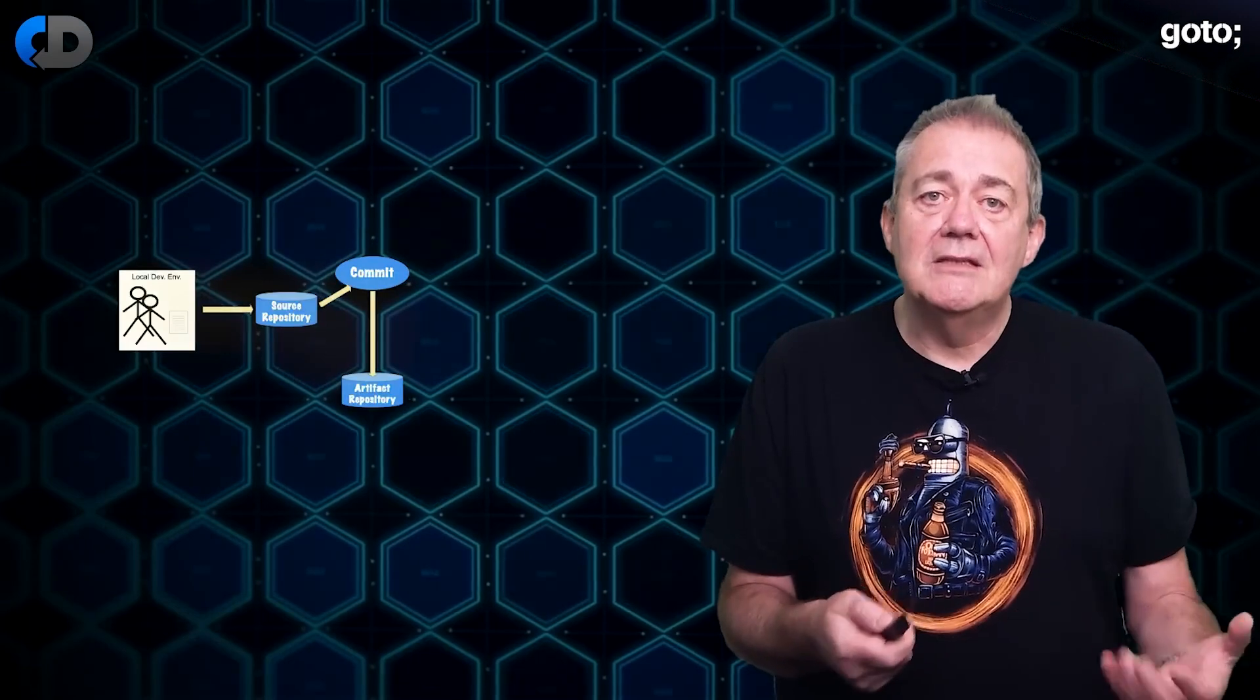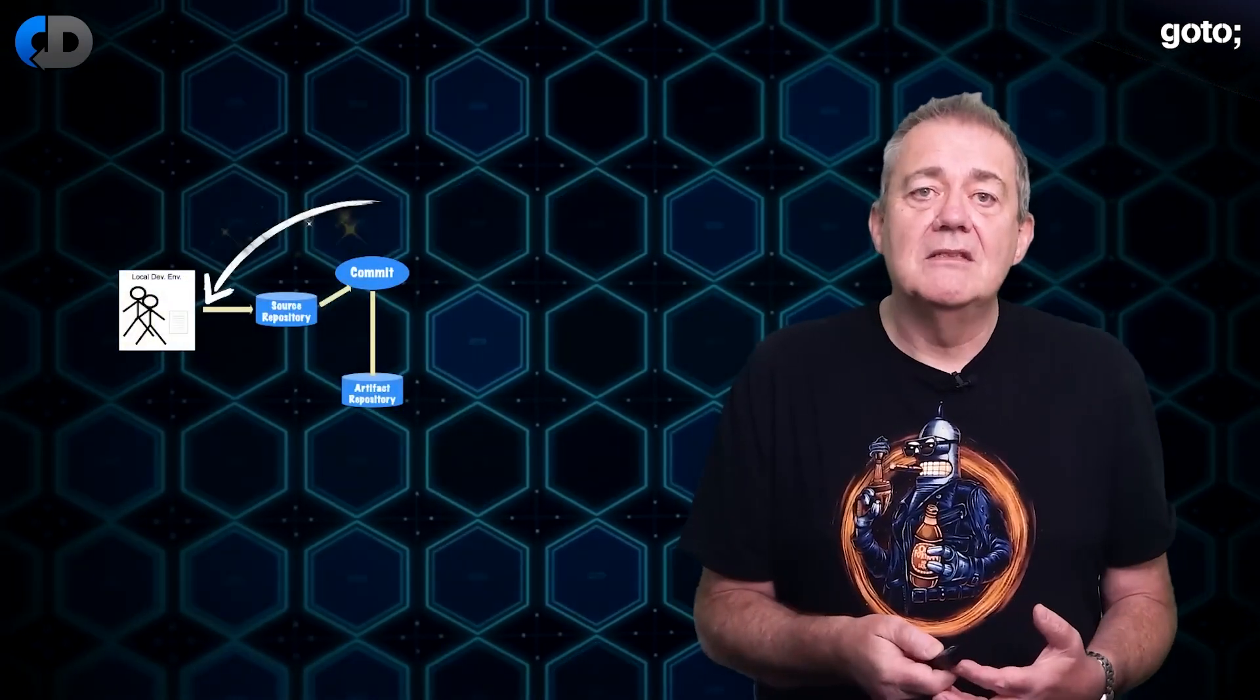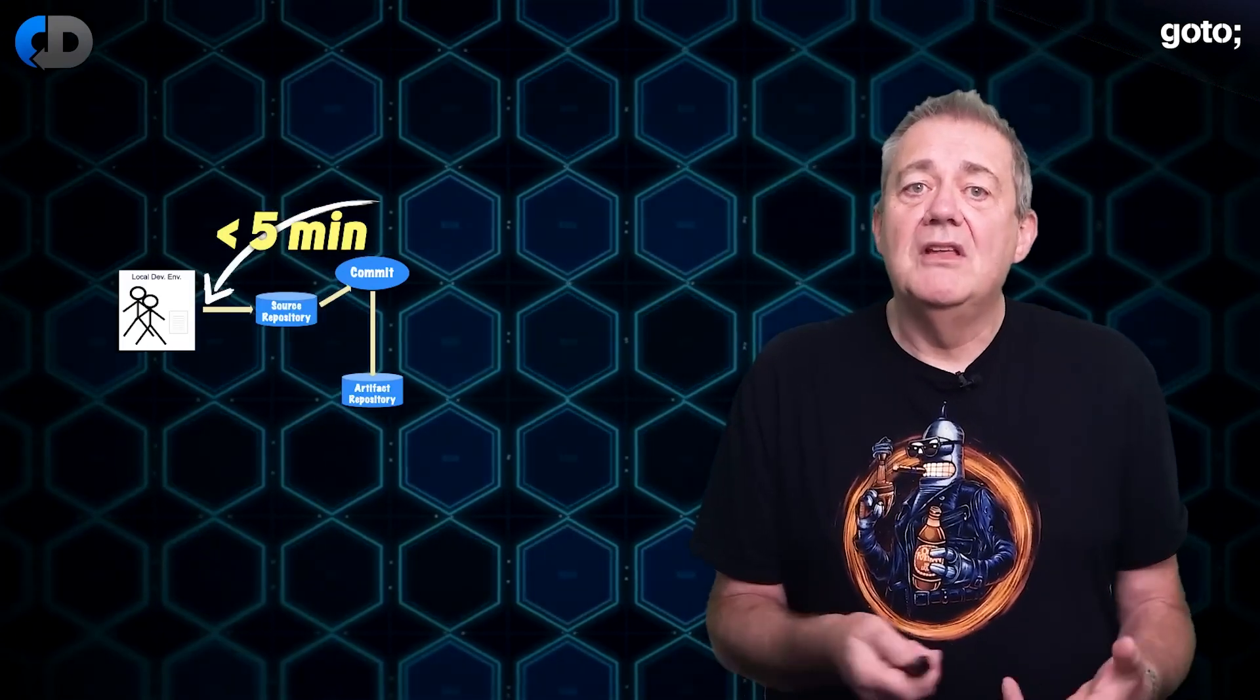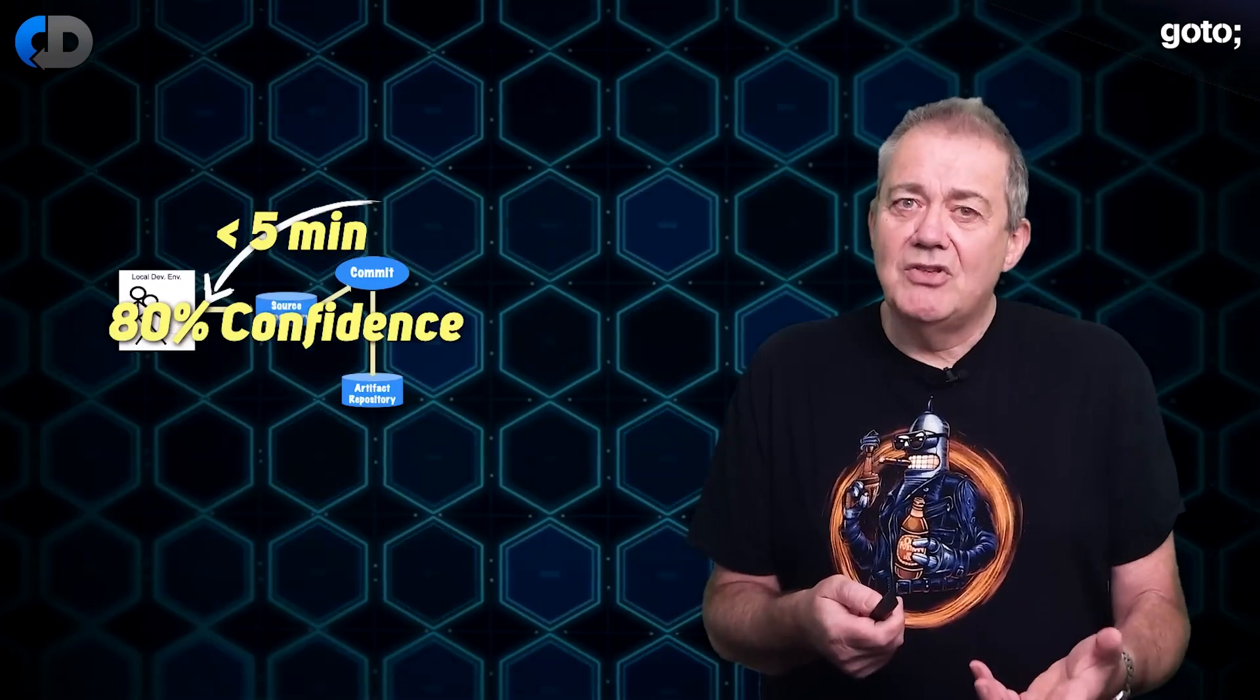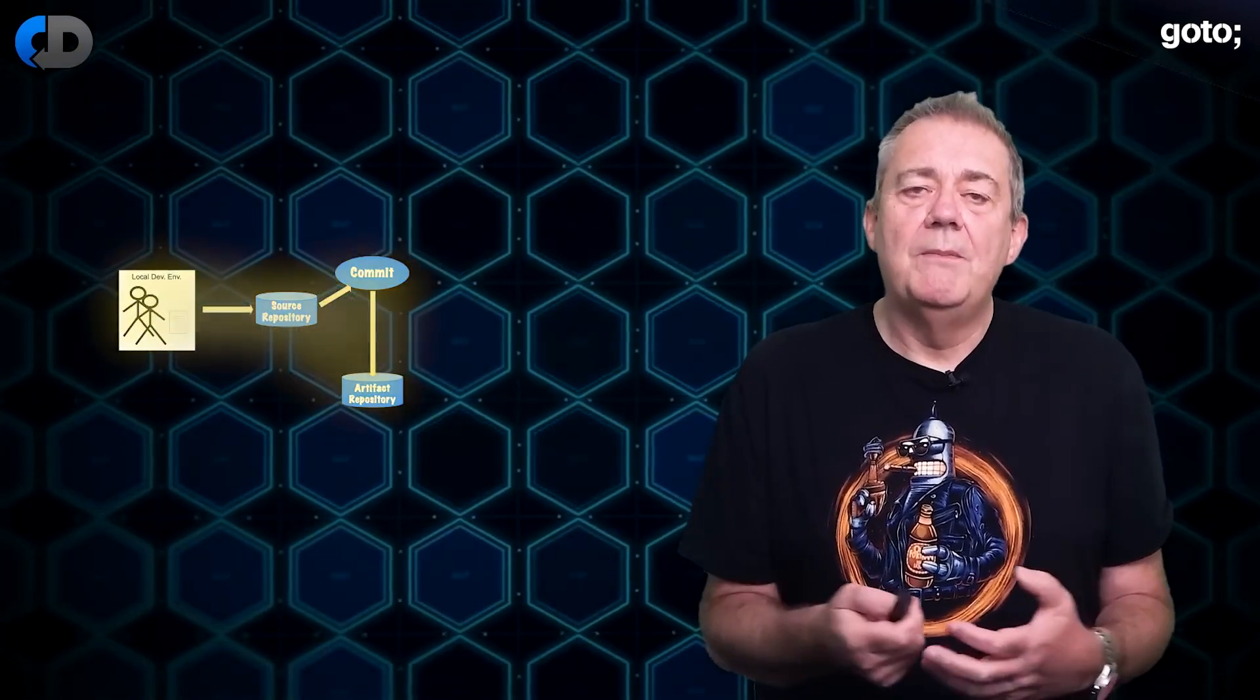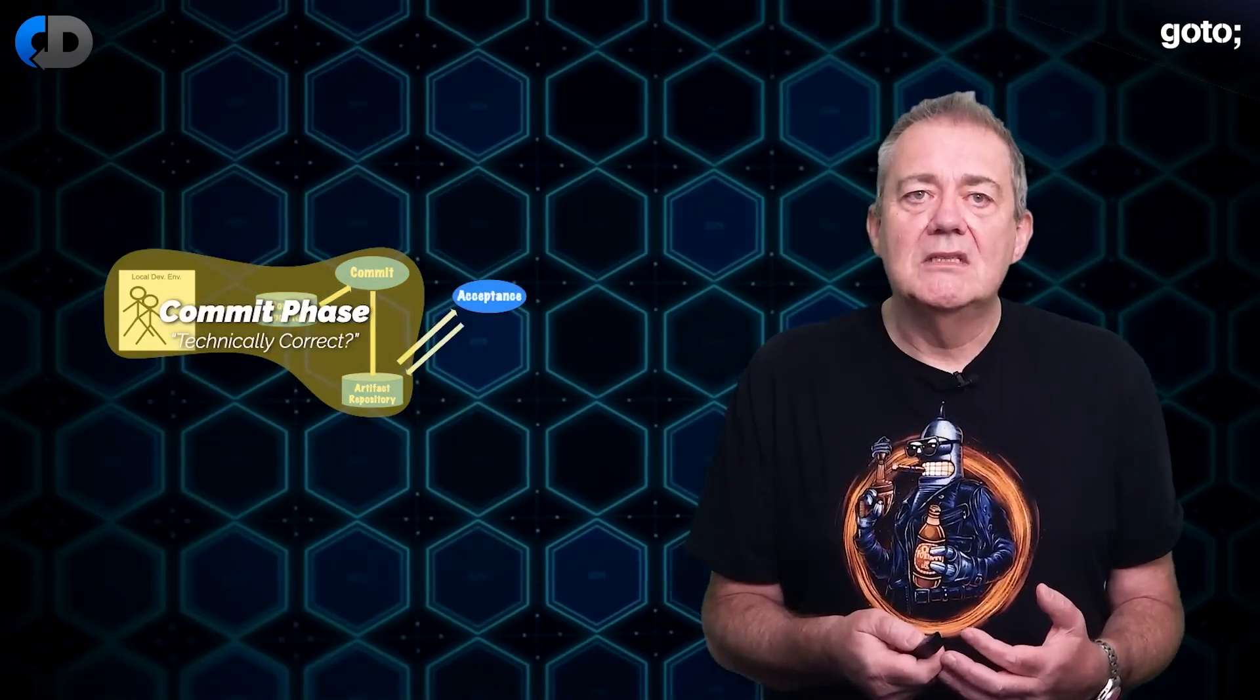For this we need a deployment pipeline. The first stage of the deployment pipeline is called the commit stage. It's optimized to give fast clear feedback and is essentially just continuous integration. I usually recommend aiming for feedback from the commit stage in under five minutes. This stage should also provide us with a high level of confidence that if all the tests here pass then only any other tests that we choose to run later are going to pass too. I generally suggest that you aim for 80 percent confidence that this is true which can easily be measured in your pipeline if you want to by checking how often tests in the commit stage fail compared to in the rest of the pipeline.